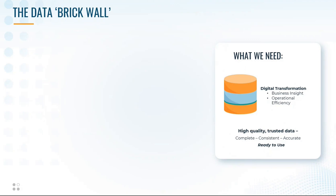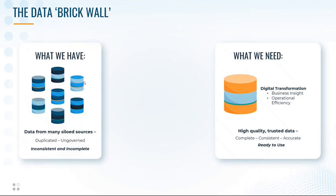We all know that we want data that is high quality and trusted, complete and consistent and accurate and ready to use so that we can use it to drive digital transformation, business insights, operational efficiency — whatever your data-centric objectives might be. But what we nearly always have instead is data that came from many different siloed sources — ERPs, CRMs, legacy systems, external data feeds, et cetera — and that data is nearly always inconsistent and incomplete, which means the records within it are duplicated, ungoverned and of perhaps questionable quality.